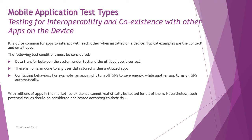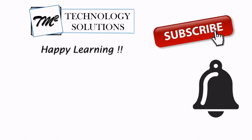There should be no data losses during app interactions, and conflicting behaviors between similar apps must be avoided. With millions of apps in the market, coexistence cannot realistically be tested for all of them. Nevertheless, potential issues should be considered and tested according to their risk — focus on interactions related to risk areas. That was all for this tutorial; feel free to comment below with any questions. Keep learning, keep exploring — thanks for watching and happy learning!